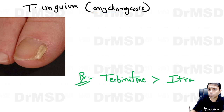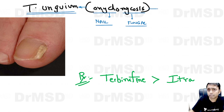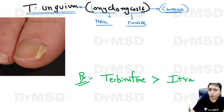Onychomycosis — if you divide this term, 'onyco' means nail, 'mycosis' means fungal infection. This is a very broad term which covers Tinea unguium, which is a fungal infection of the nail due to dermatophytes. There is another possibility that Candida or other non-dermatophytes also can cause fungal infection of the nail. Both Tinea unguium and these Candida and non-dermatophytes are broadly kept under this umbrella term called onychomycosis.